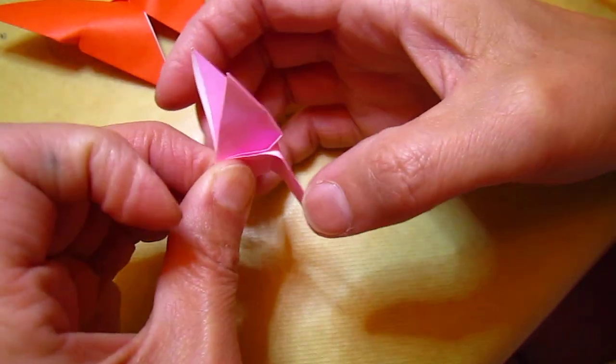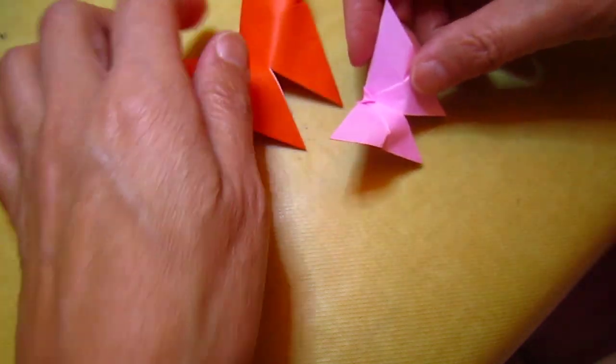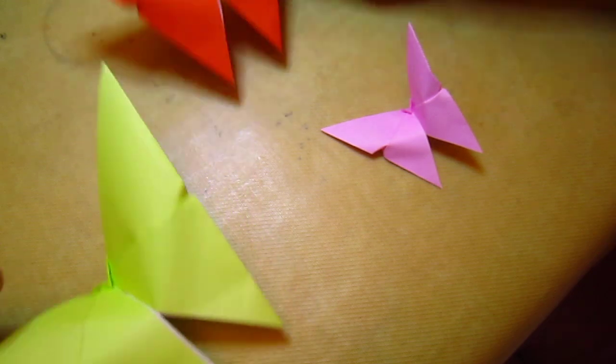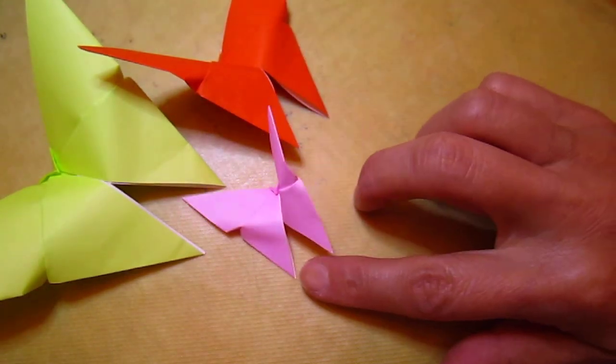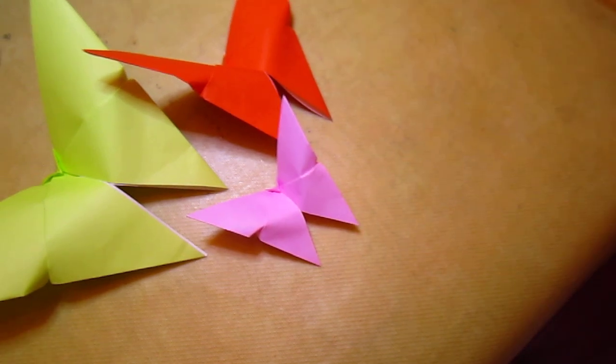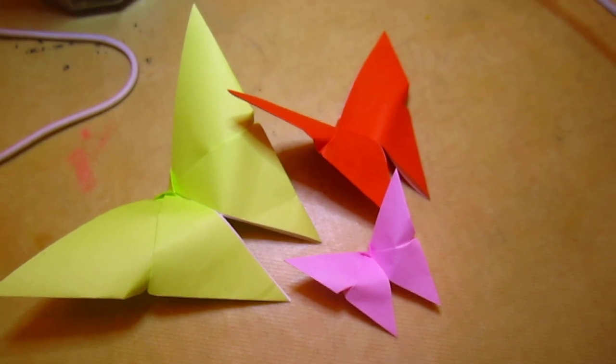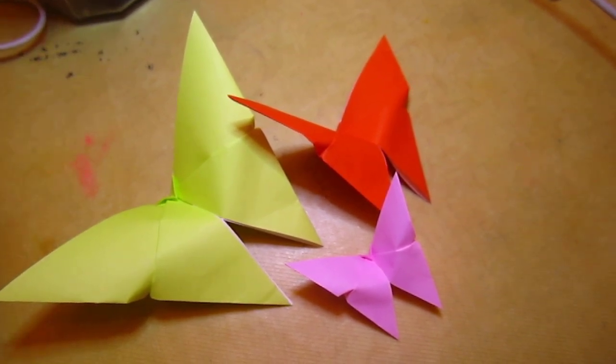So we have a butterfly family: mommy, daddy, and their baby. They should have two children, right? At least two children. My family has two, so it has to be two at least. Thank you very much.